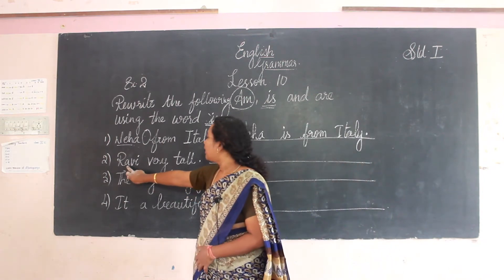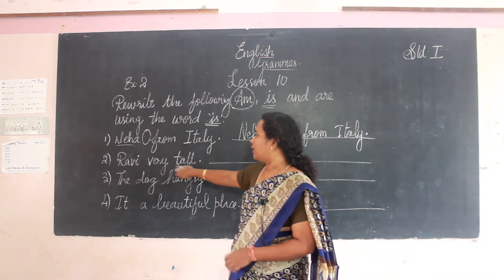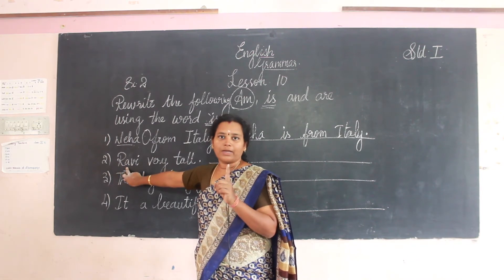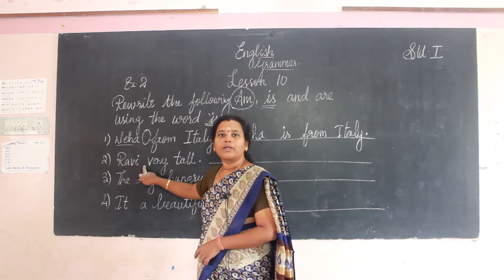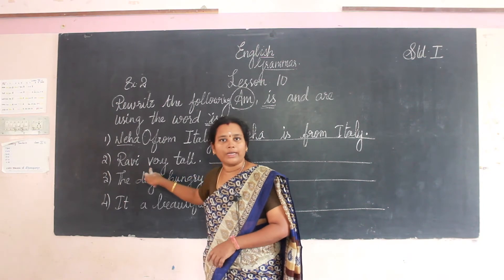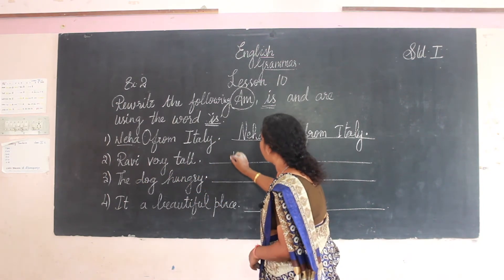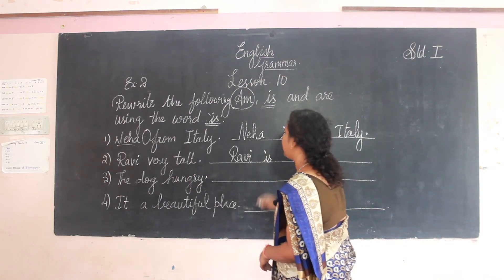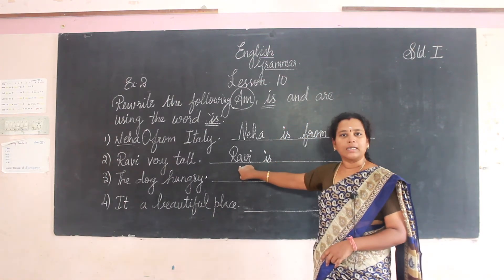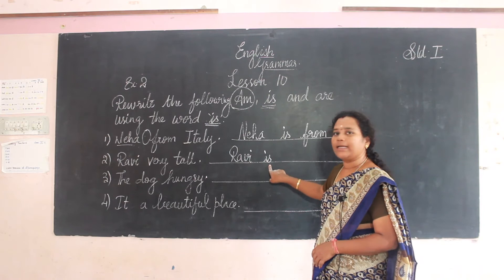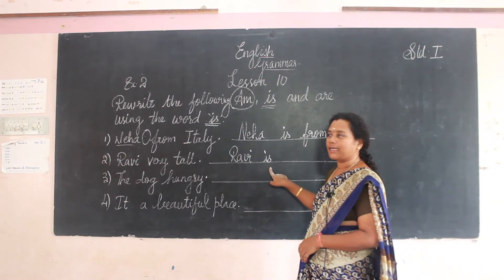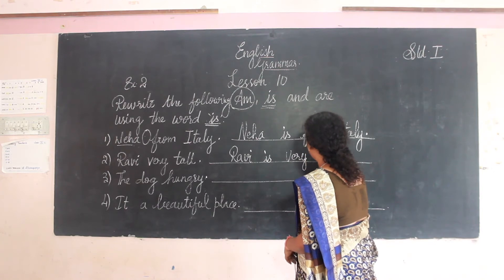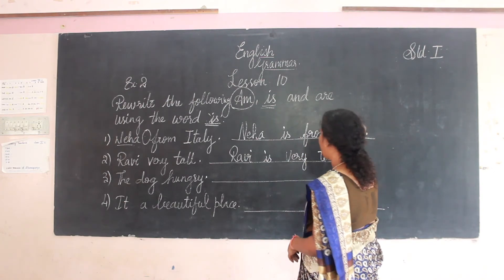Next: 'Ravi very tall.' Only one person is given. So what we will add here? 'Ravi is very tall.' Ravi is a single person, so we are writing 'is': R-A-V-I is V-E-R-Y T-A-L-L.